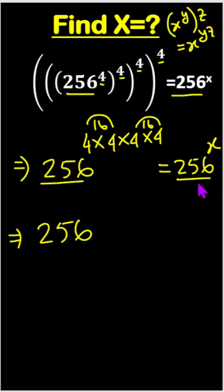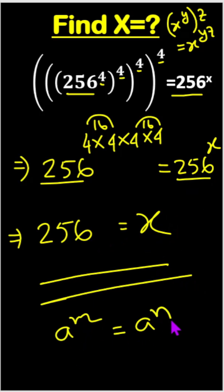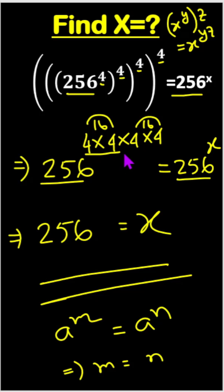Bases are same, so powers will be equal. It means 256 equals x, and this is our answer. We know a to the power m equals a to the power n means m equals n. So here 4 times 4 times 4 times 4 is 256.